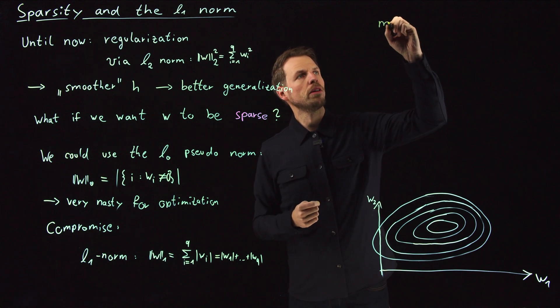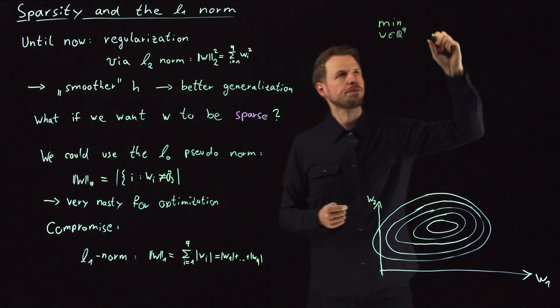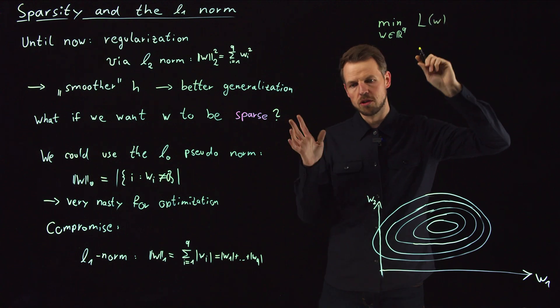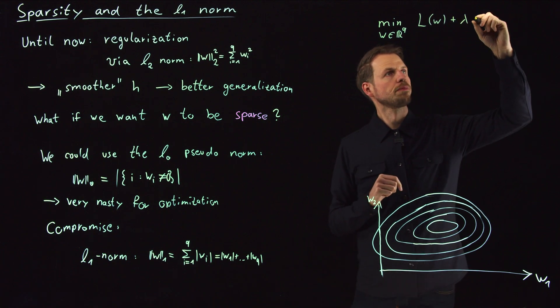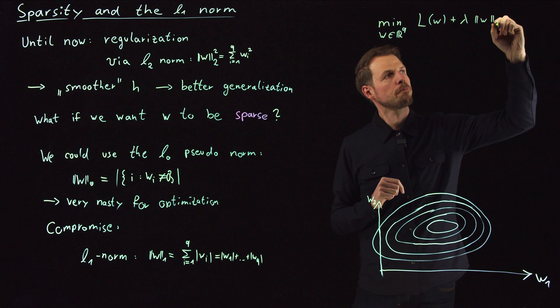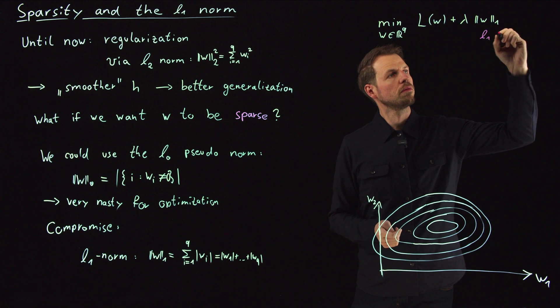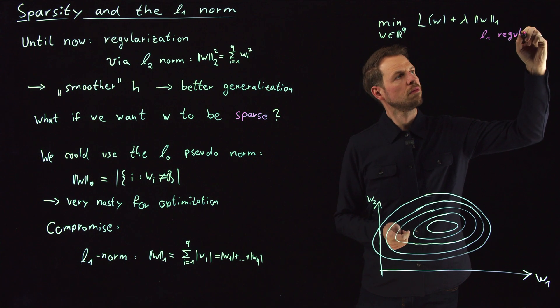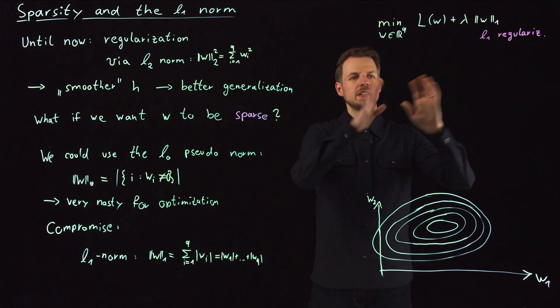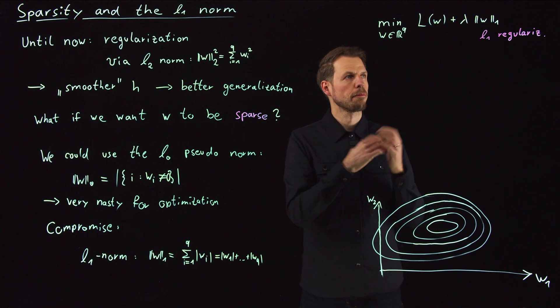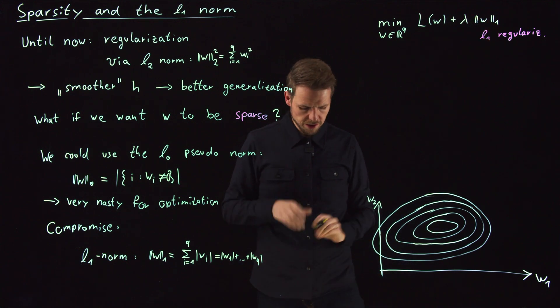So the resulting problem now is, minimize over W's from R^Q. And then we have some loss function, maybe the mean squared error. And then we have plus a regularization coefficient times the one norm. And this is what we call L1 regularization due to this. Exactly, you add an L1 term. This looks actually not so problematic if you think about this. We have replaced the 2 by 1. But let's think about this in a bit more detail.